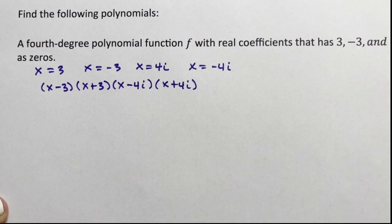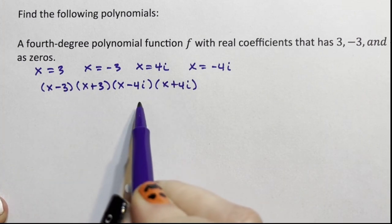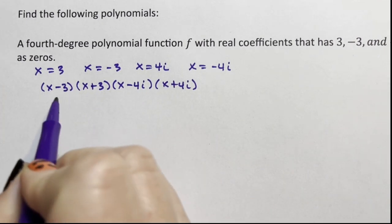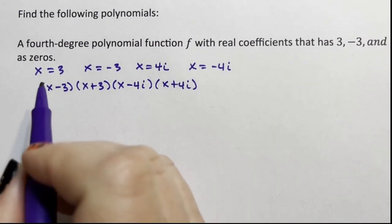When I multiply these out to find my function, I'm going to do the real two and the complex two, the imaginary ones. These are lovely—they're all difference of two squares. They're going to be really pretty to multiply out.